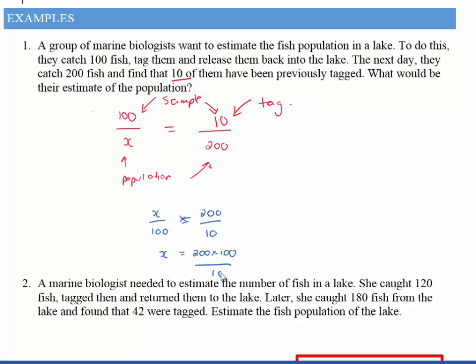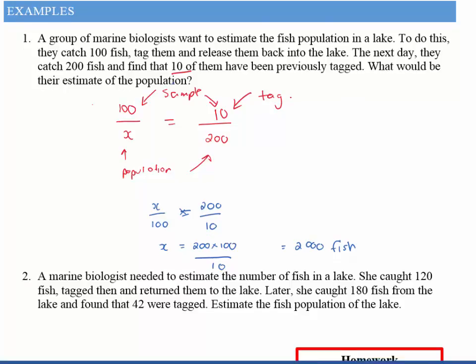And if you work that out you get 2000, so it's estimated that the population of the fish in this particular lake is 200 fish. And that's how easy capture-recapture is, nothing difficult going on. So let's have a look at the next one.